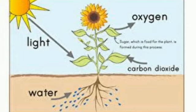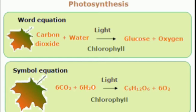Let us see what happens during photosynthesis. First, the root absorbs water from the soil and passes it to the leaves. Second, carbon dioxide is absorbed from the air by the stomata. And third, the sunlight falls on the leaves and is absorbed by the chlorophyll. After this, a chemical reaction takes place in which water, carbon dioxide and sunlight get converted into glucose and oxygen. Now, the plants prepare their food. In plants, food is in the form of glucose, which is a type of sugar.